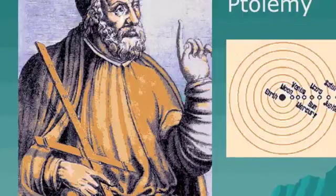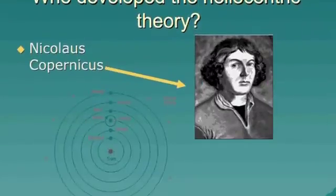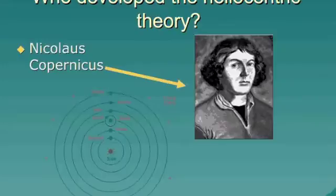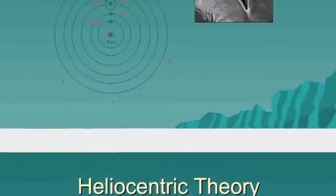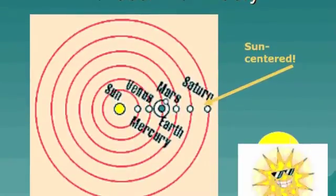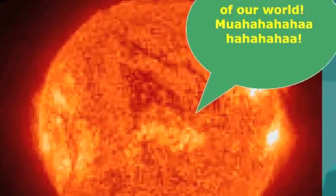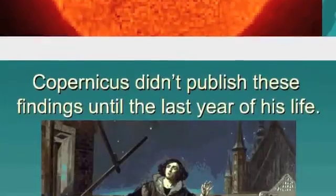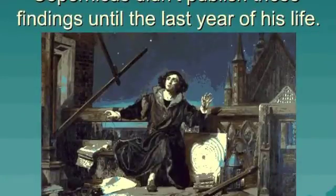Christianity also supported this idea once Christianity grew, because of course, God would put the earth at the center, so they thought. Now, Nicholas Copernicus, who lived in what's modern-day Poland, lived from 1473 to 1543, and he challenged this theory. He thought instead that the sun was in the center of the universe, and this is known now as the heliocentric theory, or sun-centered theory. It's a little different from our theory today, a little bit incorrect, but it was correct in knowing that the sun was the center and things revolved around it, instead of the earth being the center. Putting something besides the earth as the center of the universe was a really big deal.